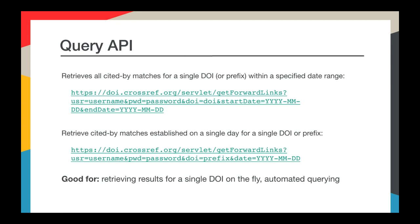We also have an API that can be used to retrieve matches on a larger scale, and many members prefer it over the XML query method. You can retrieve all matches for a single DOI or a prefix within a date range. You can also retrieve results for a single DOI on a single day, which is useful if you want to update citations as users access a DOI landing page, or if you want to update all matches for your prefix daily. If you have a lot of cited-by matches, you might encounter timeout problems, in which case we have another API better suited for high-volume matching.